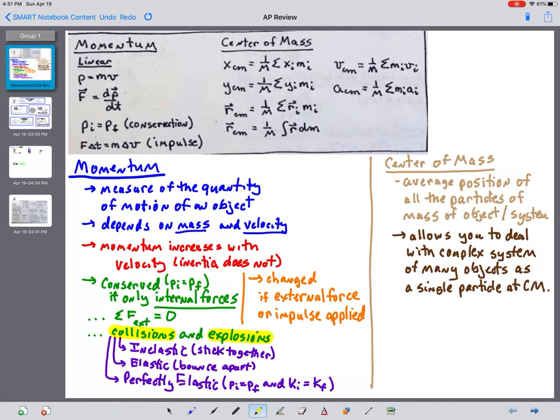With collisions, we talked about inelastic collisions where the objects stick together and elastic collisions where the objects bounce apart. In both of these situations, PI equals PF because it's two objects pushing on each other or two objects interacting in a situation where Newton's third law would apply. Now we also talked about perfectly elastic collisions. In perfectly elastic collisions, both momentum and kinetic energy are conserved.